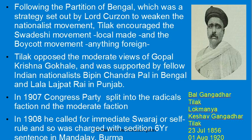He opposed the moderate views of Gopal Krishna Gokhale and supported the views of Bipin Chandra Pal (from Bengal) and Lala Lajpat Rai (from Punjab). In 1907 the Congress split into the radical and moderate factions. In 1908, Tilak called for Purna Swaraj — immediate self-rule — was charged with sedition and sent to jail in Burma for six years.